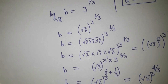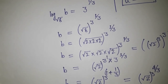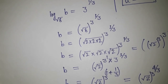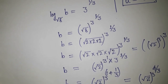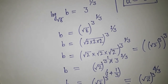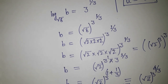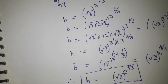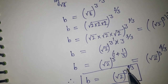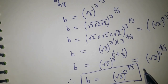So I can write the final answer: B equals root 2 to the power 3, which also has power 4 by 3. So this is our solution for B: B equals root 2 to the power 4 by 3.